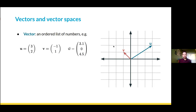This vector u here corresponds to three, two — you can see it's three in the first coordinate and two units up in the second coordinate. Similarly, the second vector v is negative one, one. This is the kind of geometric picture that we've probably all seen before.